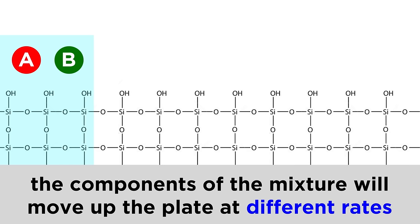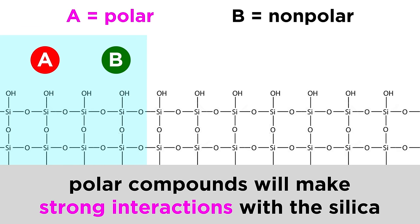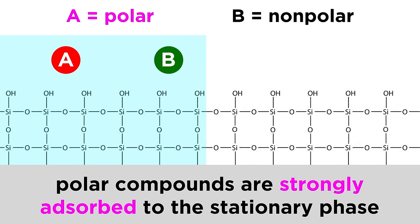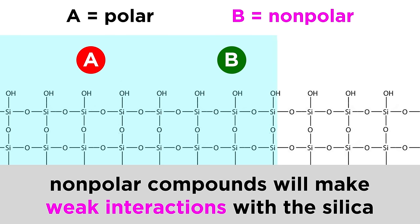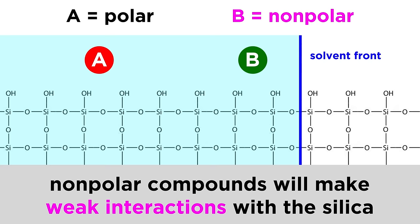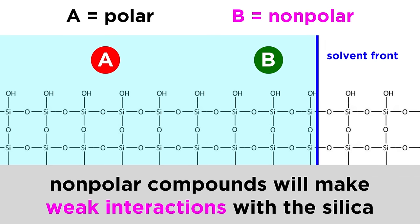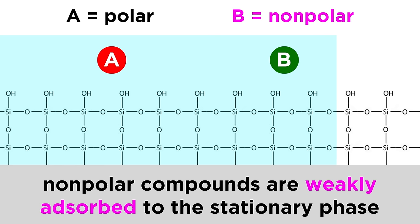However, as the components move across the plate, they will interact with the hydroxyl groups in the silica to differing degrees. A substance that has polar functional groups, or a strong net dipole, will interact significantly with the stationary phase. We can say that this substance is strongly adsorbed to the stationary phase. This will cause it to move more slowly along the plate, almost as though the interactions make it sticky. A substance that is largely nonpolar will not interact very well with the stationary phase, and will instead move along the plate very close to the solvent front. We can say that this substance is weakly adsorbed to the stationary phase.